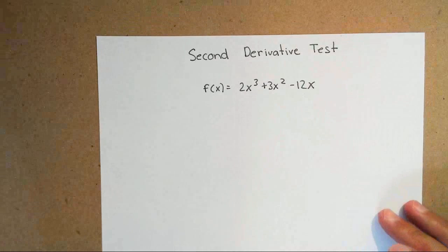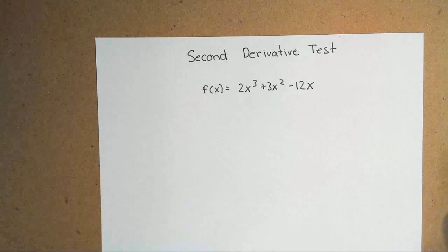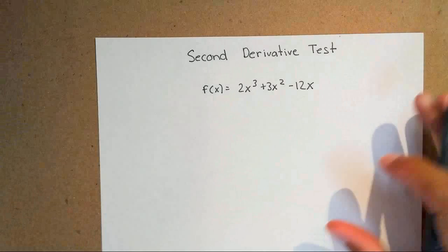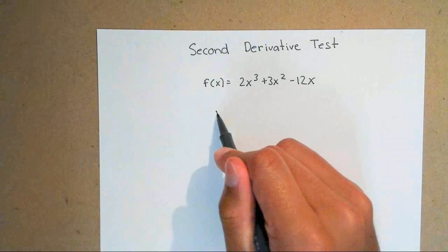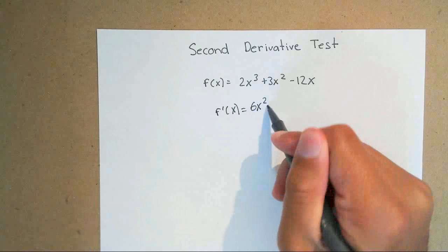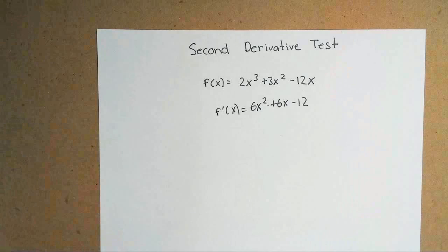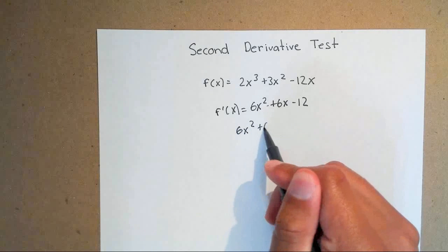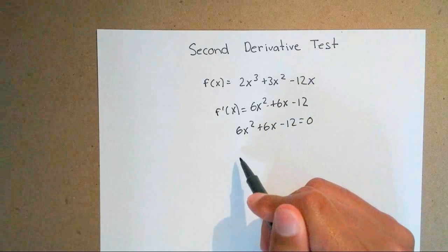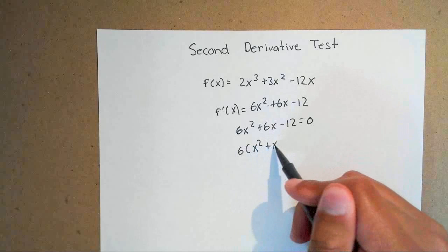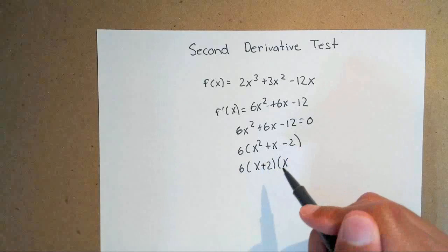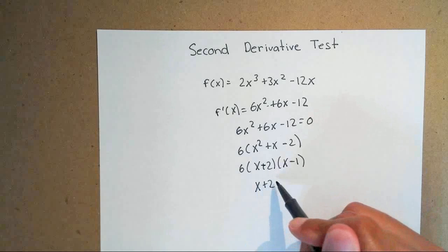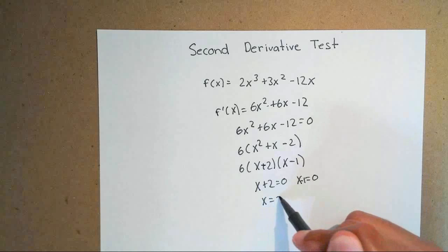The second derivative test is used to help determine whether you have a max or a min at a critical number. The first thing to do is find the first derivative. The first derivative of this equation gives f prime of x equals 6x squared plus 6x minus 12. Then set the derivative equal to zero and factor out a 6 from all three terms. Setting each factor equal to zero gives x equals negative 2 and x equals 1.